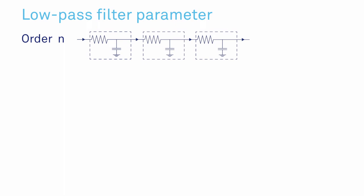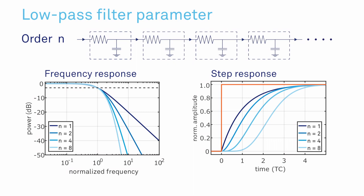The order indicates how many identical filters are cascaded. The larger this number, the steeper the roll-off. This leads to stronger rejection of unwanted frequencies but to longer settling times.